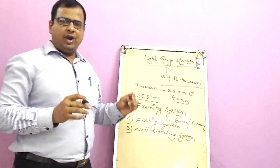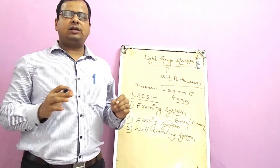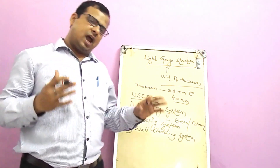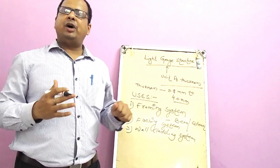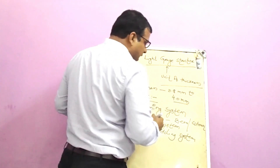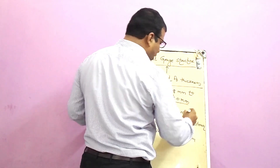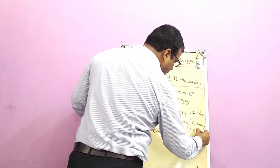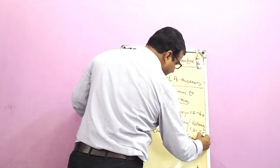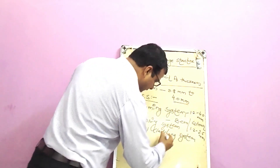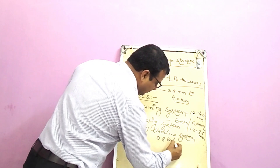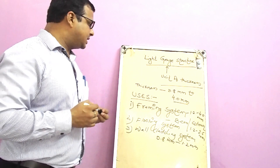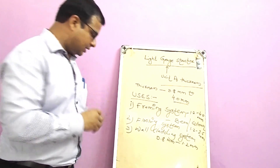In the wall cladding system, where a wall is already constructed but needs protection, light gauge members are used. The thickness range for framing is around 1.2 to 4 mm, for flooring around 1.2 to 2.5 mm, and for wall cladding around 0.8 to 1.2 mm.